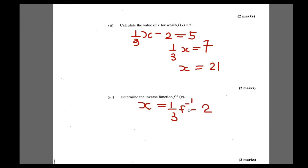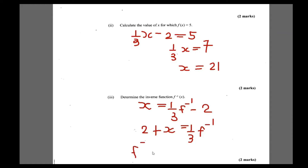Then make f⁻¹ the subject. Bring over the 2: 2 + x = 1 over (3·f⁻¹). To get f⁻¹, multiply both sides by 3. So f⁻¹(x) = 3 times 2, which is 6, plus 3 times x, which is 3x.